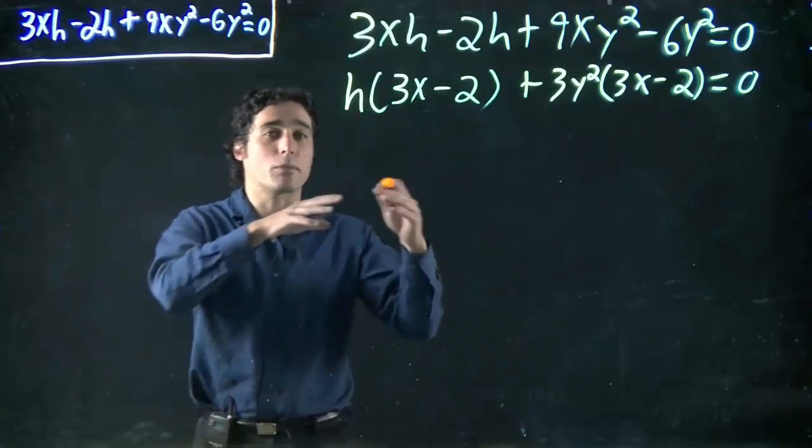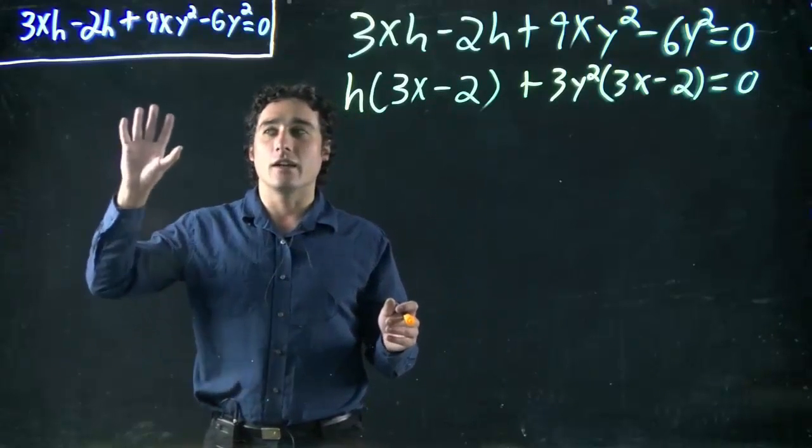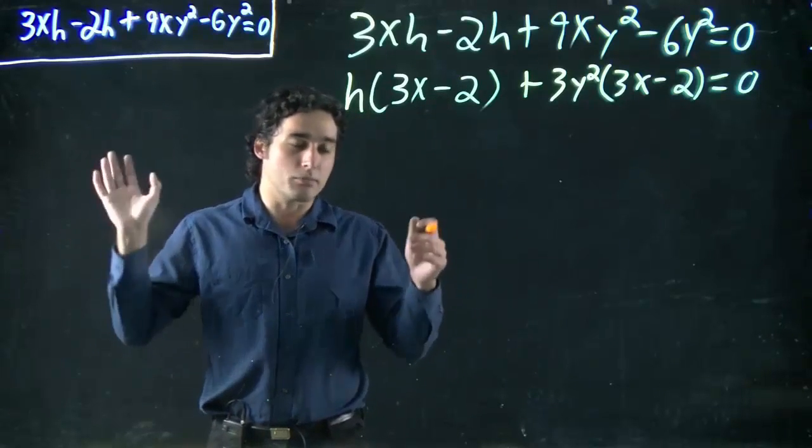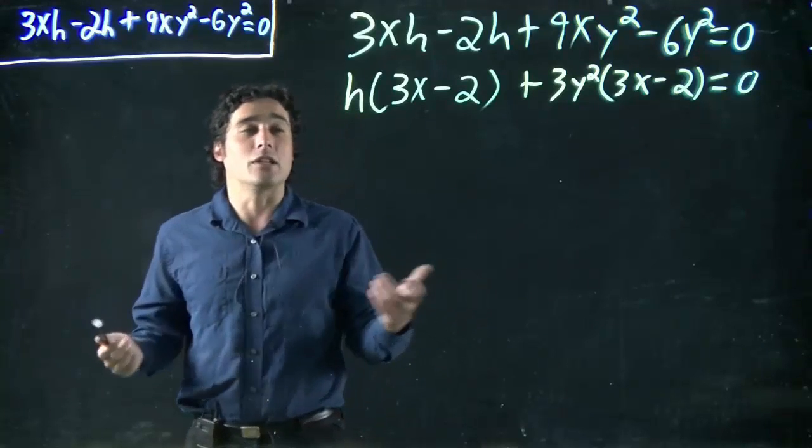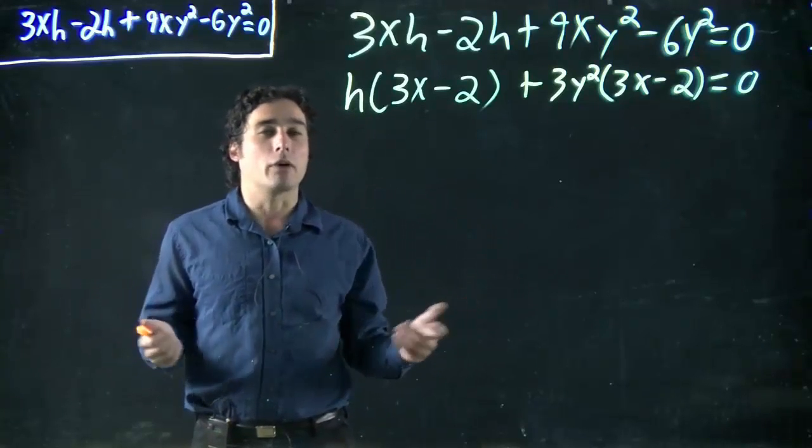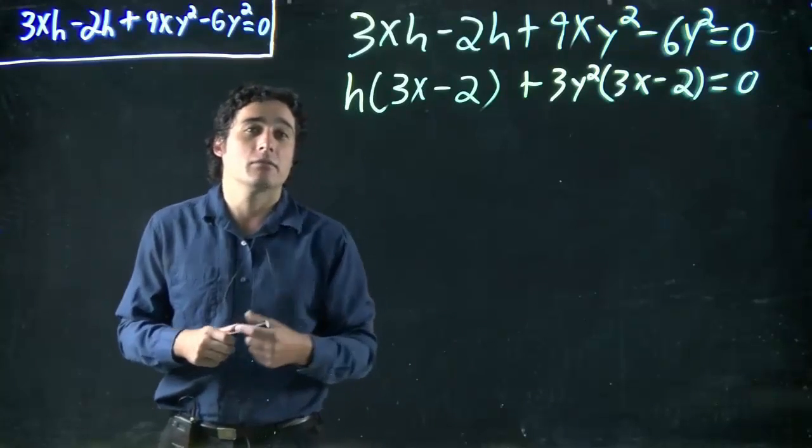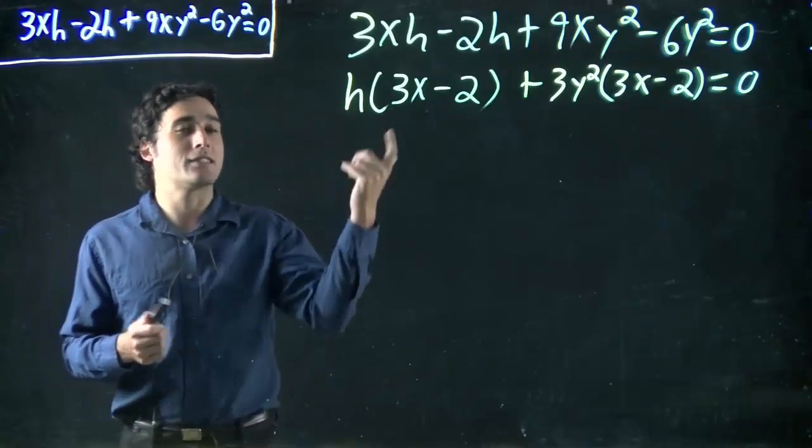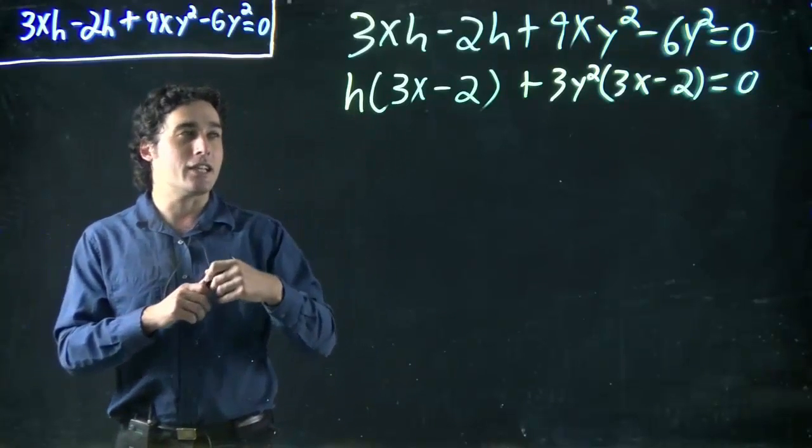We're always allowed to replace something in an equation with something else if we define it, and then just plug it back in later. In a lot of cases, that would be useless. I mean, I could say h is equal to k. Okay, that wouldn't help me. I could do it, and then later on, replace k with h again.